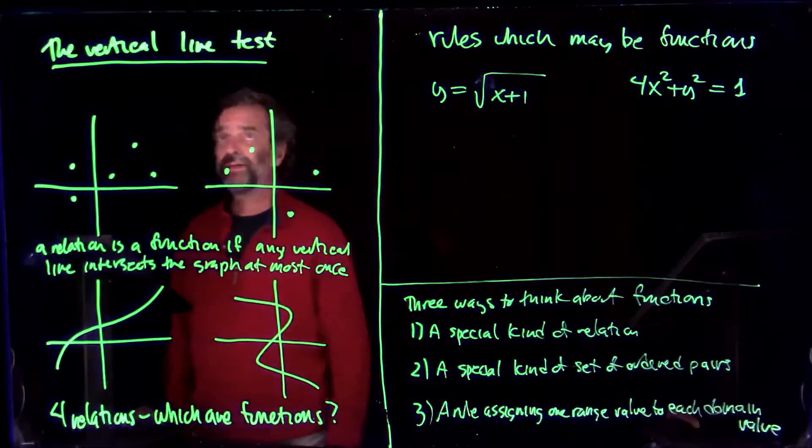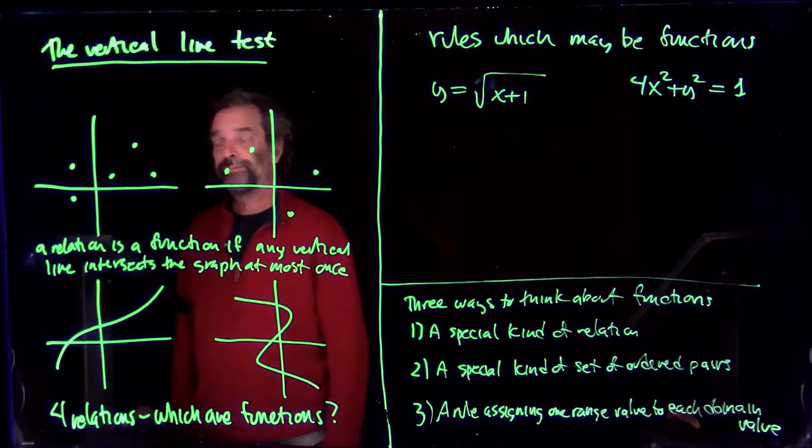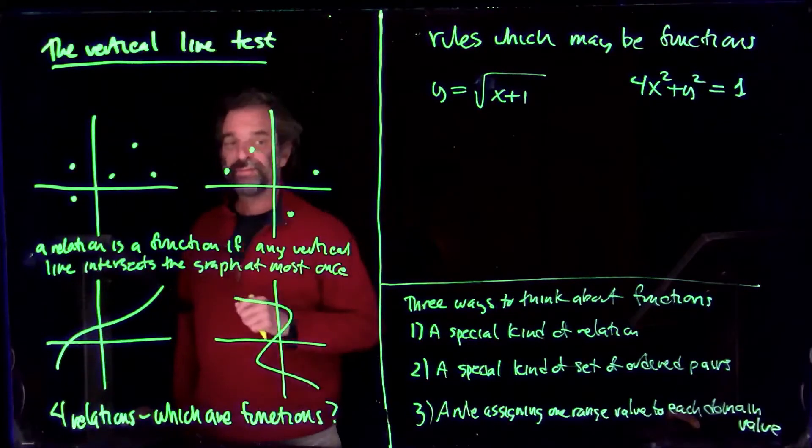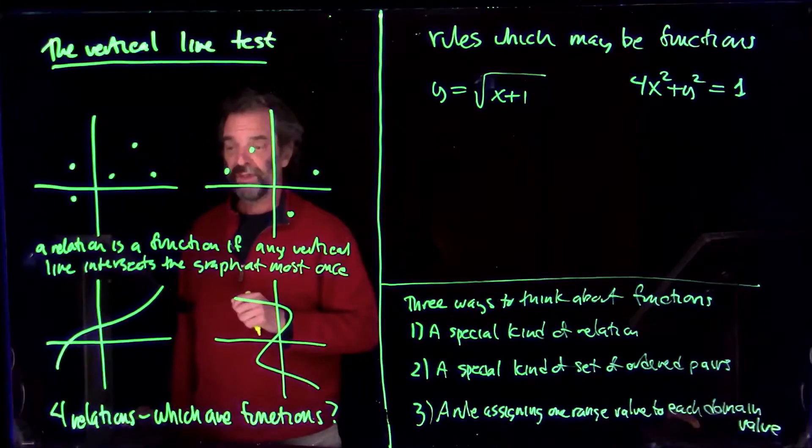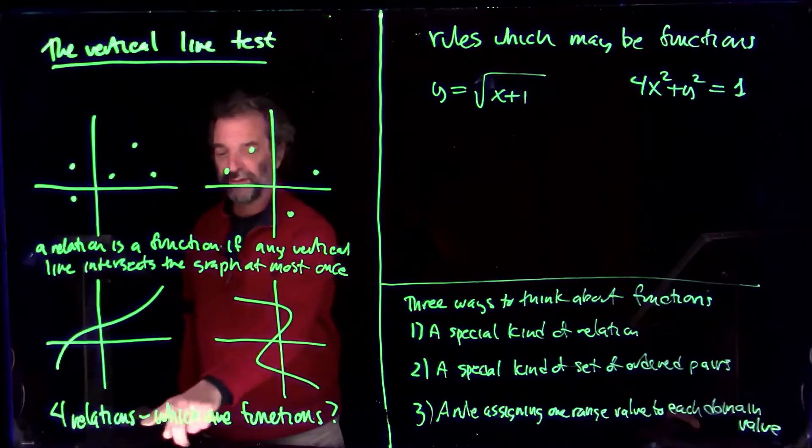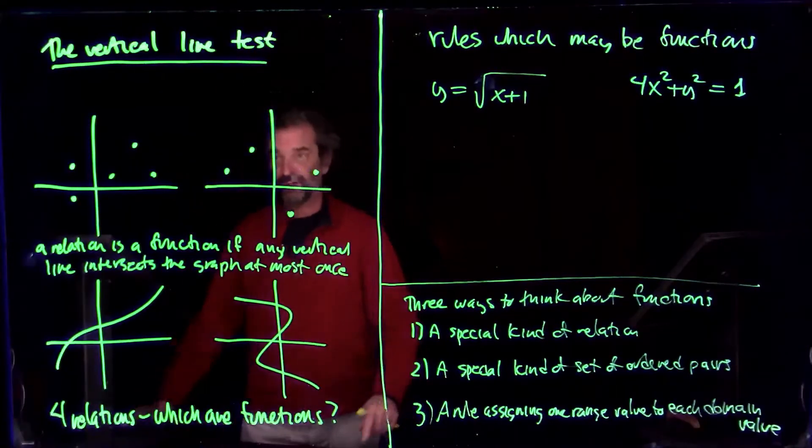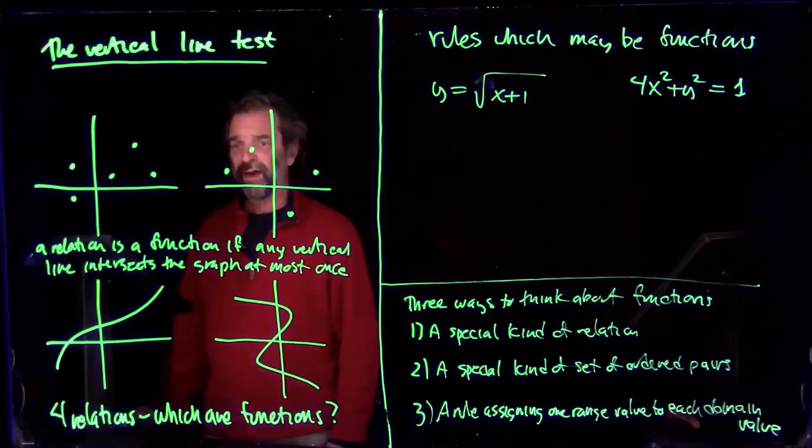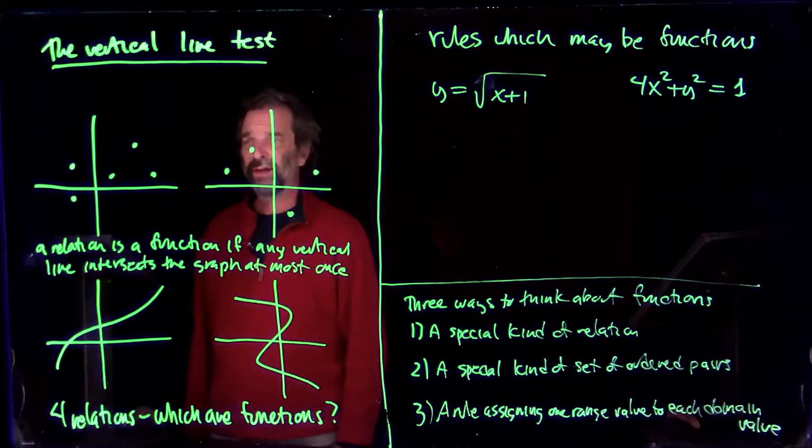So first of all, we've got what's called the vertical line test. It says a relation is a function if any vertical line intersects the graph at most once. Here we have four different relations, which are functions. So we want to draw vertical lines which intersect the graph and make sure they only intersect it at most once.